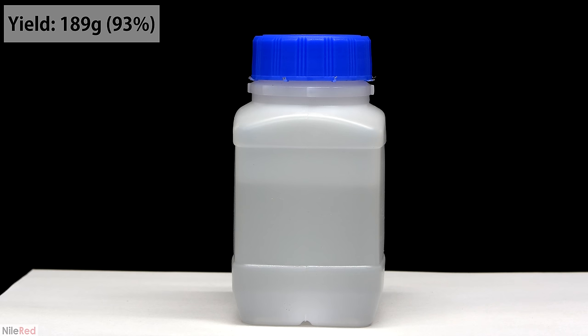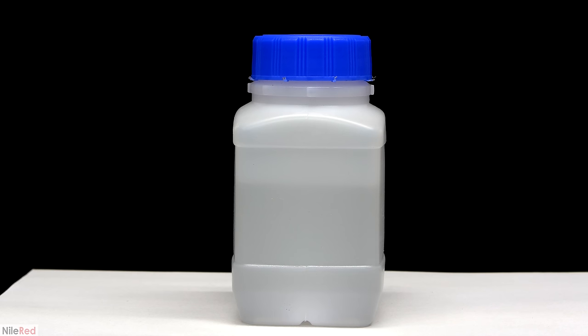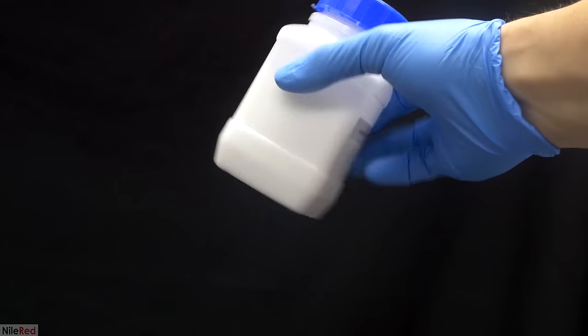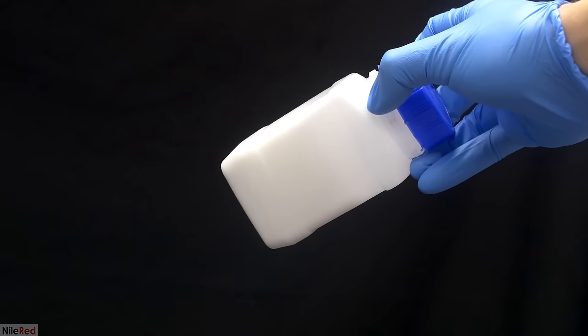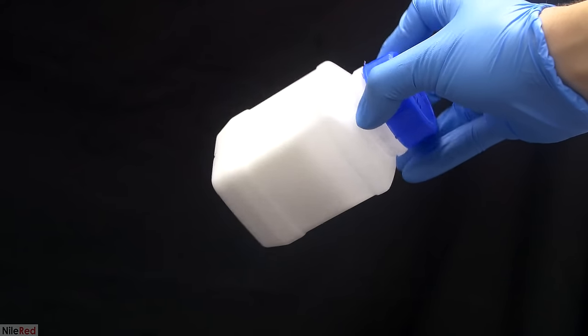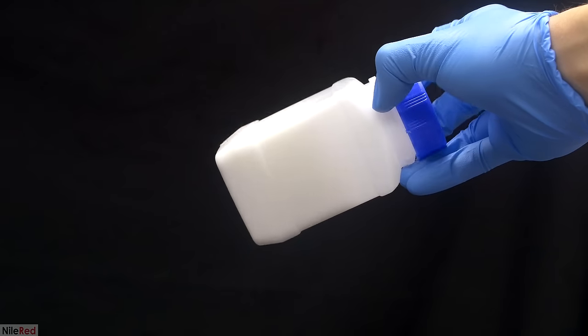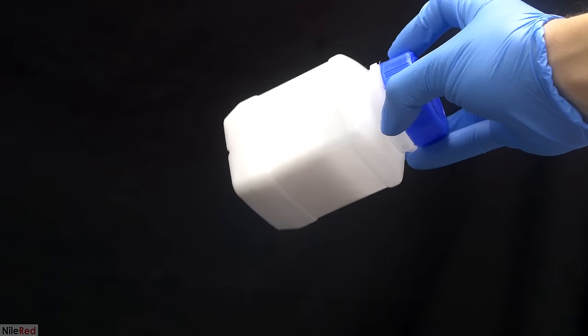As I said before, this aluminum isopropoxide is going to be used to make 1-octen-3-ol. Other than that, I don't really have any plans for it, so if you guys have any good suggestions, please leave them in the comments. Just as a quick side note, it took a few days or a week, but the isopropoxide did eventually solidify. Anyway, that's all I have to say for now, and I'll see you guys on the next one.